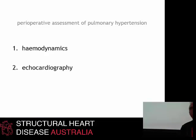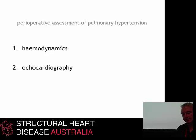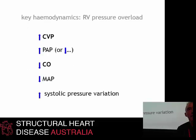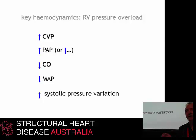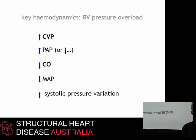So how can we assess these patients perioperatively? There are really two main ways: through the use of haemodynamic monitors and through echocardiography. The key haemodynamic marker of right ventricular pressure overload is an increased CVP — this is really the canary in the mine in these patients. If you've got a patient with a high CVP, it's always a sign of right ventricular dysfunction perioperatively.